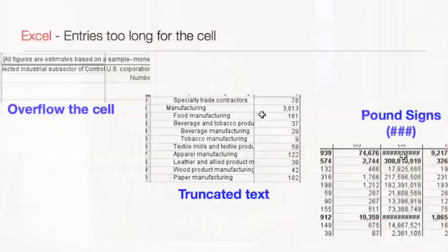If a cell has a long string of data or text, it will either overflow its cell, appear truncated, or display as a series of pound signs. To make everything display correctly, you can either adjust the column widths or turn on text wrapping.